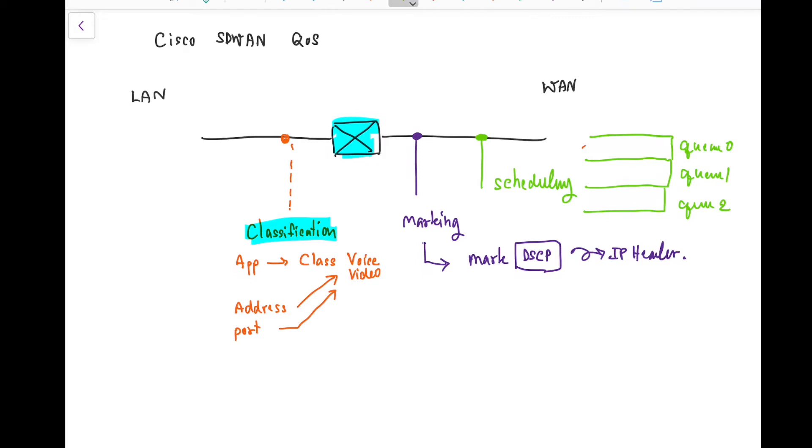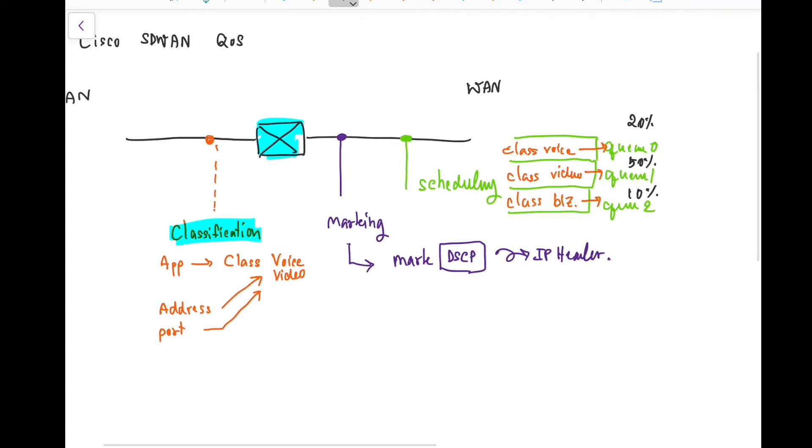After that, the last process of the QoS is scheduling. So basically we have a QoS which is Q0, Q1, Q2, Q3, then we put the class all the applications, this is already classified in the class like voice class, video class, whatever business internet. Then we're going to push to the queue. Each queue will have different characteristics. For example, Q0 is a low latency queue, which is reserved to be 20% of the total bandwidth, or Q1 50% of the total bandwidth, and Q2 is 10% of the total bandwidth.